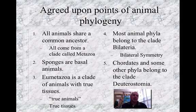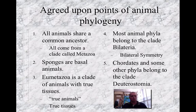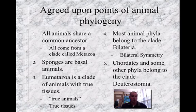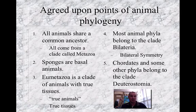Over the years we've moved from basing phylogeny on physical characteristics to a molecular basis using DNA, which has caused some disagreement. However, there are five things everyone agrees on: all animals share the same common ancestor, the metazoa; sponges are basal animals with no true tissue; eumetazoa is a clade of animals with true tissue; most animal phyla belong to the clade bilateria; and chordates and some phyla belong to the clade deuterostomia.